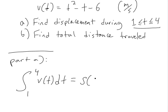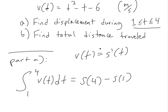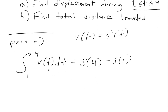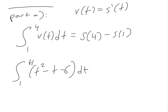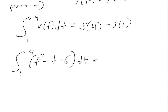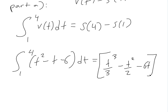For part A, the displacement is the integral from one to four of the velocity function V(t) dt, which equals S(4) minus S(1), where V(t) is the derivative of S(t). So we just solve this integral. We take the anti-derivative: the integral of T² − T − 6 gives us T³/3 minus T²/2 minus 6T, evaluated from one to four.